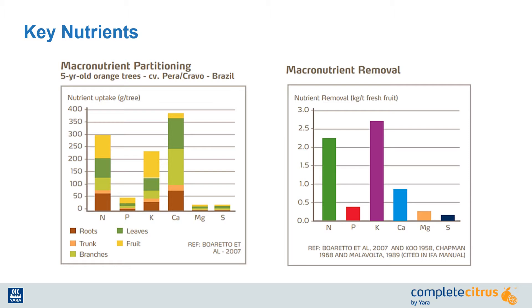These nutrients are also removed in the largest quantities at harvest. While citrus is a perennial crop, there is a year-round demand of these key nutrients to fuel the many processes needed for tree health and fruit production. It is crucial to understand how the tree uptakes these nutrients from the soil.